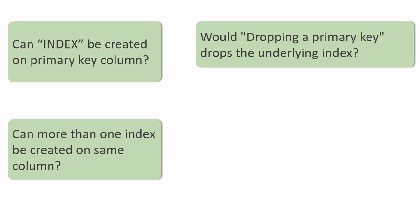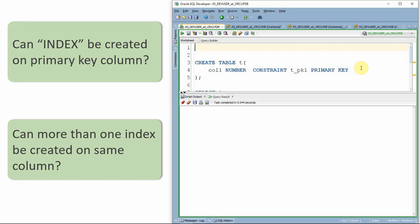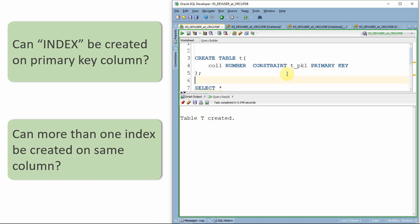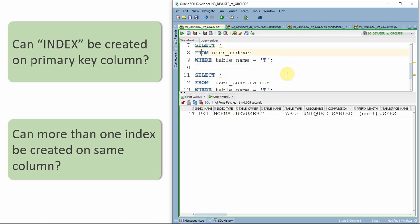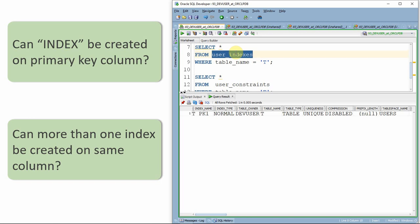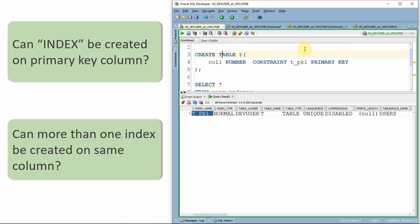First, let us understand what happens when we create a primary key. Here I'm creating a table called T with one single column called column1 of number data type, making this column as a primary key column. The moment we create a table with a column as a primary key, Oracle automatically creates an index. You can check in the user_index data dictionary and you'll see one index called t_pk1 that is created — the name is derived from the constraint name.